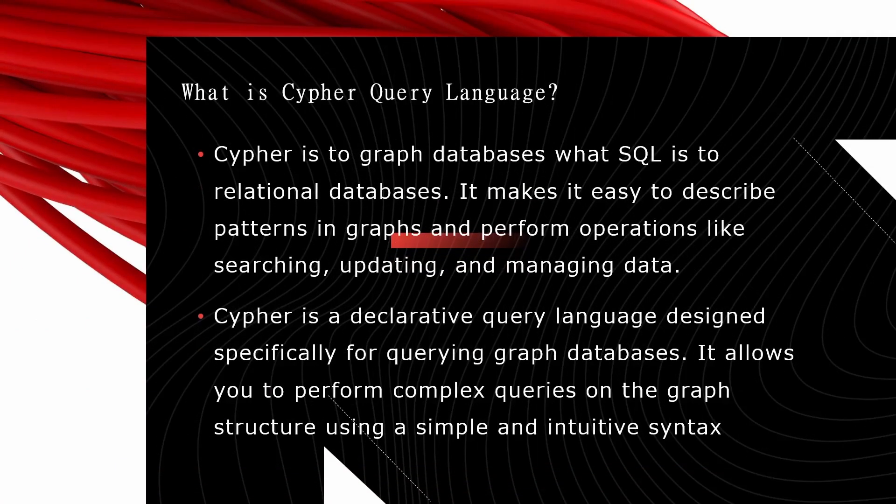The main thing in the graph database is the Cypher query language. What exactly is Cypher? In simple terms, like SQL is to relational databases, Cypher is to graph databases. Cypher makes it easy to describe patterns in graphs and perform operations like searching, updating, and managing data. It is a declarative query language designed specifically for querying graph databases, allowing complex queries on graph structures using simple, intuitive syntax.